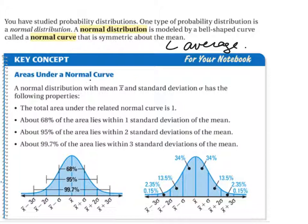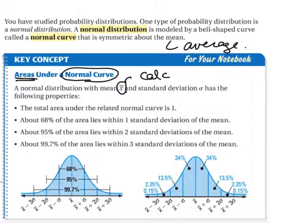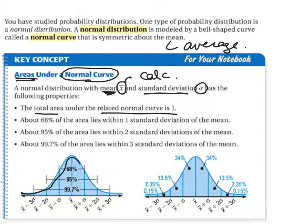A normal curve — we can actually analyze the area under a normal curve and use it in our statistics studies. Normal distribution with mean x-bar — our calculator will actually spit this out for us. It is the symbol for mean, and a standard deviation of sigma has the following properties. The total area under the related normal curve is 1, so if I shaded all the area underneath, it is 1.